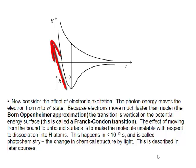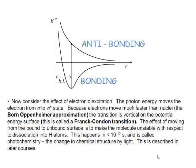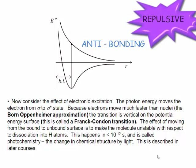As we're forming the bonding molecular orbital, at the same time we're forming the antibonding molecular orbital, although it's not populated with any electrons just yet. But that antibonding surface is always repulsive.